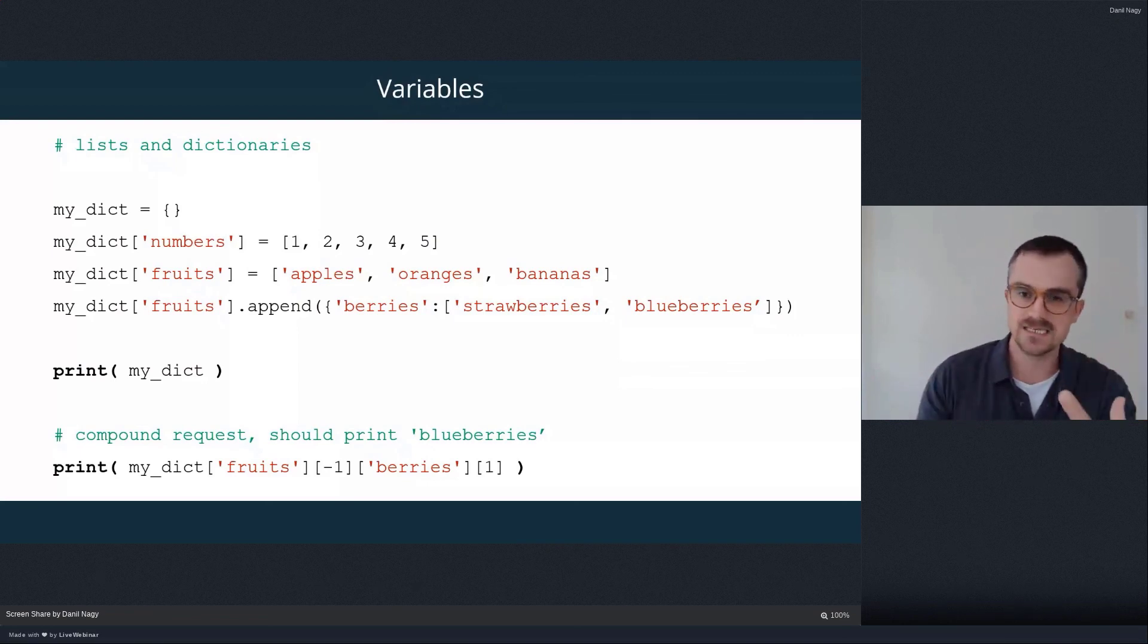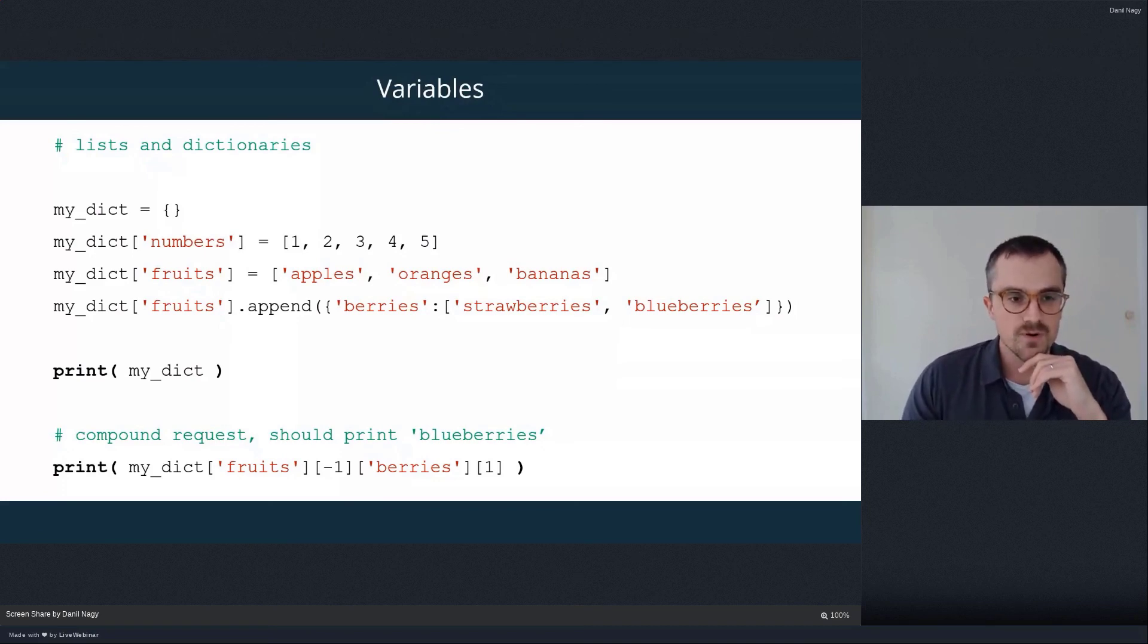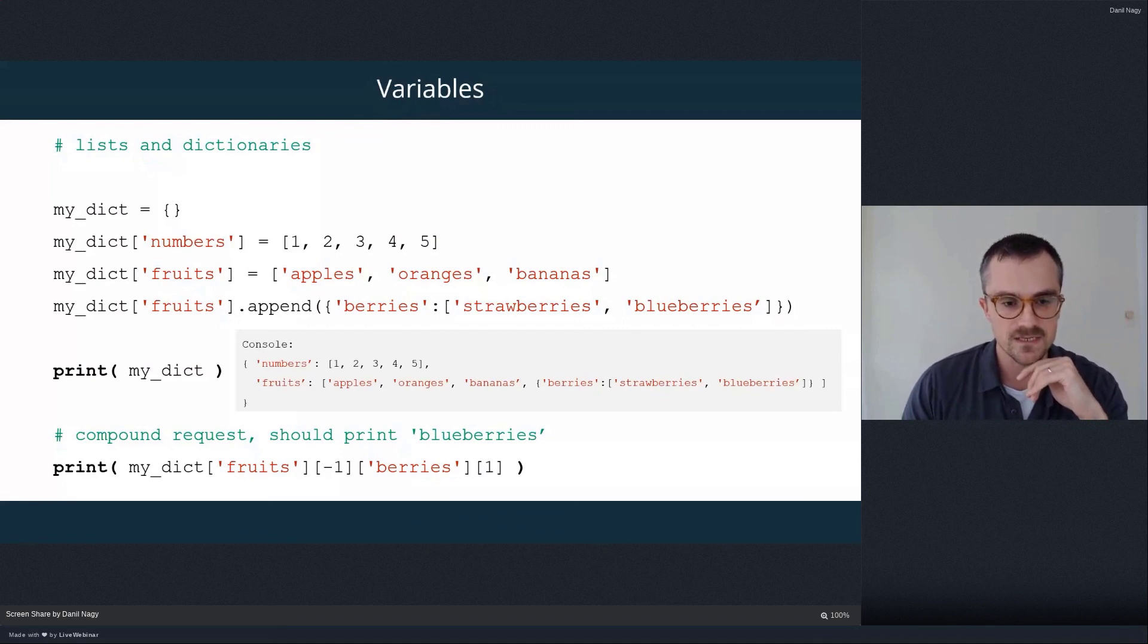So now we've actually gone three levels of depth. We've nested a dictionary within a list that's nested within another dictionary. And this kind of nesting of data structures is very common in Python.